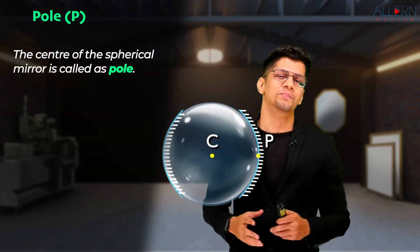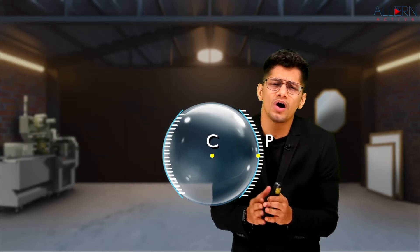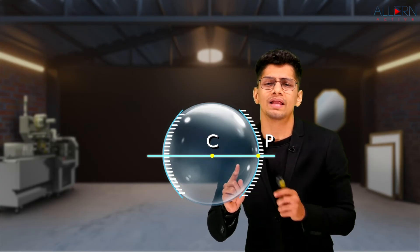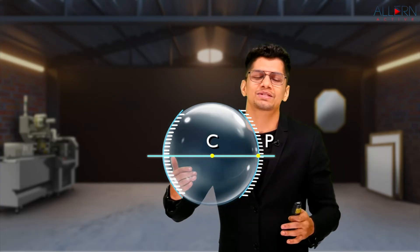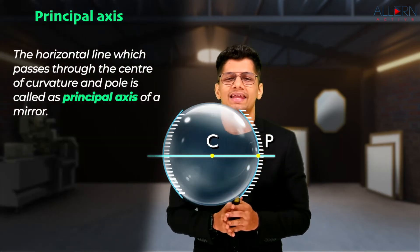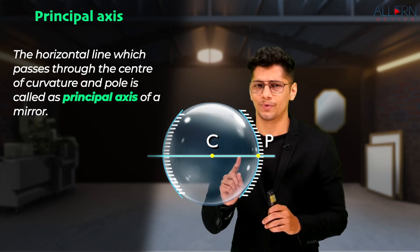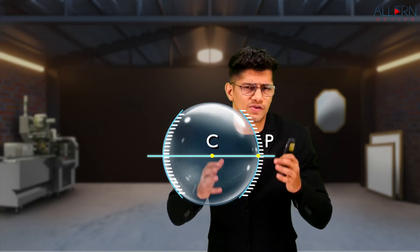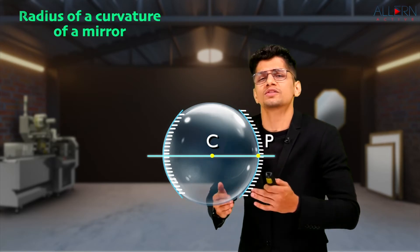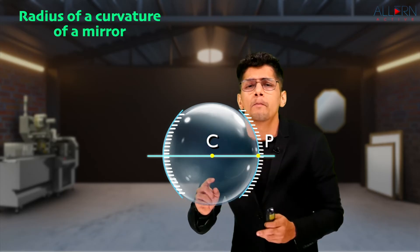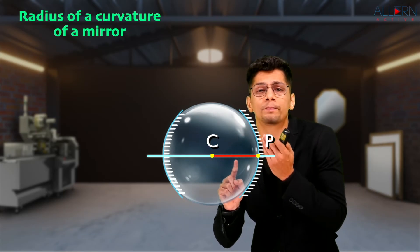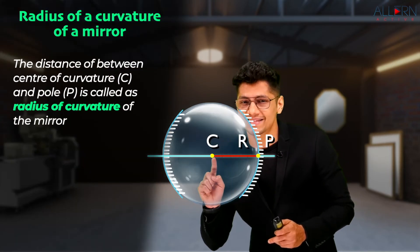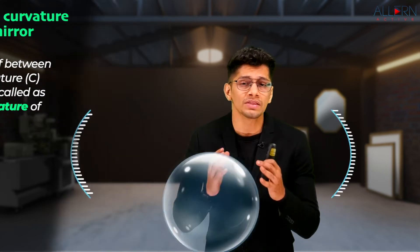We also have a center of the spherical mirror itself, denoted by capital P, and we call it the pole. So the center of curvature is the center of the sphere, but the pole is the center of the spherical mirror. If you draw a horizontal imaginary line passing through the center of curvature and the pole, that line is called the principal axis of a mirror. Similarly, just as the distance between the center and circumference of a circle is called the radius, we have the radius of curvature in spherical mirrors.